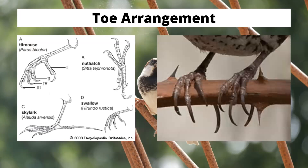The rear toe that's part of this foot assembly is known as a hallux. You can see the toe arrangement illustrated here — on the titmouse and nuthatch, for example, they have those three toes in front and one in the back. In the side image, you can see what it's actually intended to do: the bird is able to hold on very easily to a thorny rose cane during its dormant season, standing on branches and canes without much difficulty.